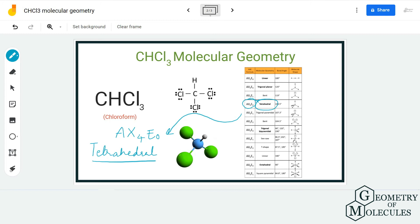The bond angle is 109.5 degrees. So these bond angles are 109.5 degrees. The molecular geometry of CHCl3 is tetrahedral, and I hope this video helps you to understand that.